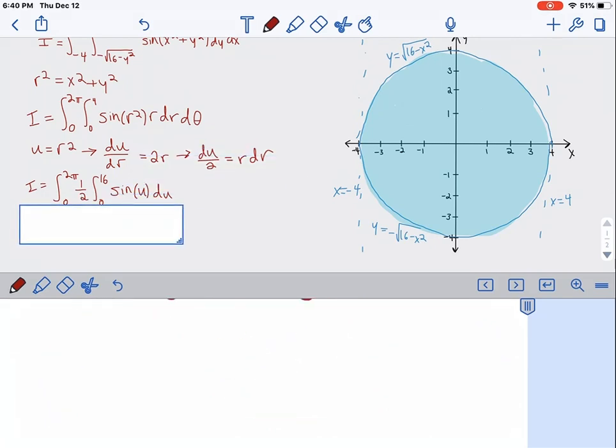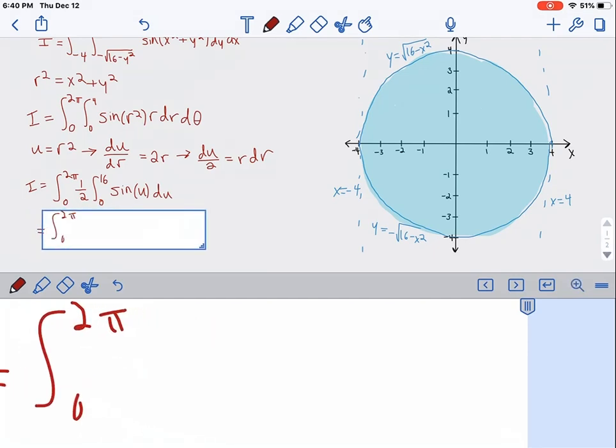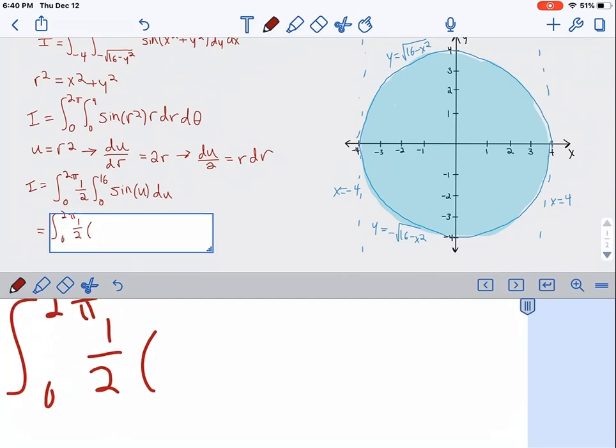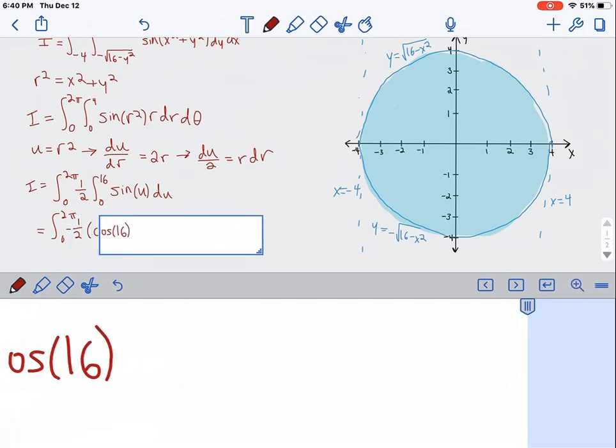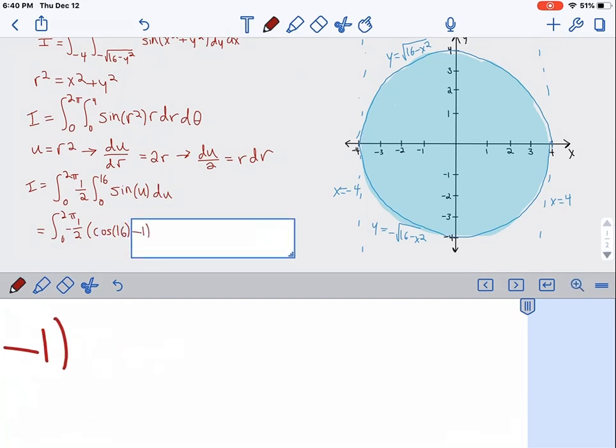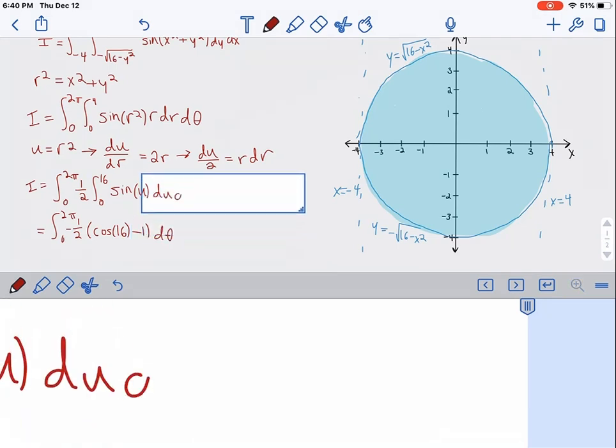Now we can solve this. It's in a pretty easy form now. This equals the integral from 0 to 2 pi of negative 1 half times the cosine of 16 minus the cosine of 0, which is just 1. And we're still integrating with respect to theta.